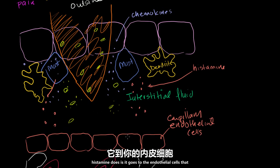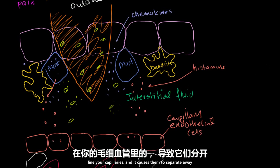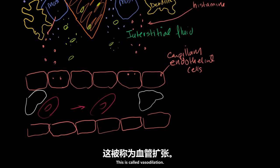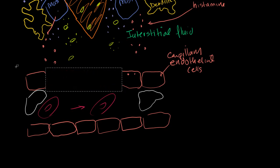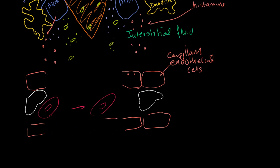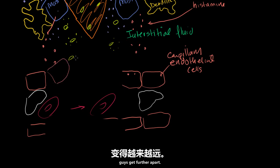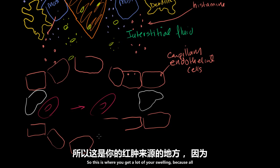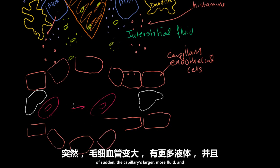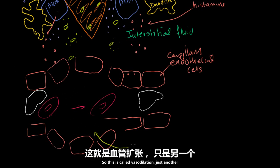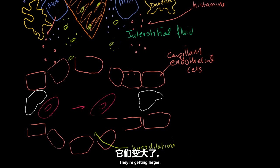So the histamine goes to the endothelial cells that line your capillaries and causes them to separate away from each other and make the actual capillaries larger. This is called vasodilation. So let me erase some of these and make them get larger. The histamine has come in, so now these guys get further apart and the actual capillary becomes larger. This is where you get a lot of your swelling, because all of a sudden the capillary is larger and more fluid collects. It gets smaller further down, so it really encourages the fluid to collect right around here.